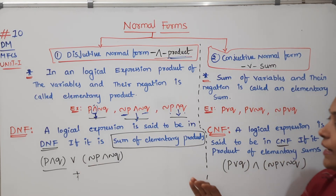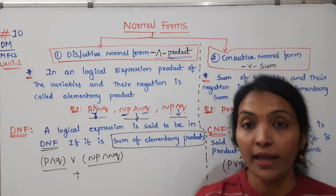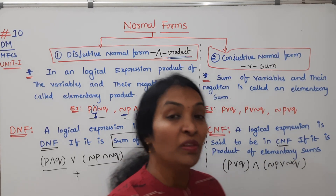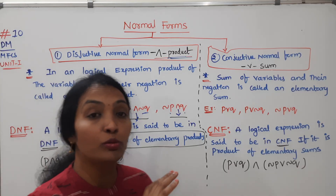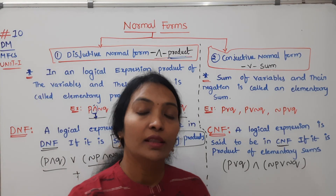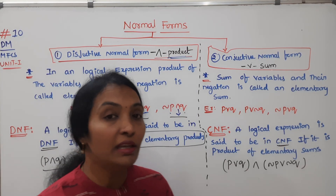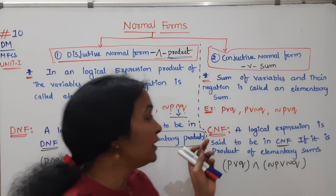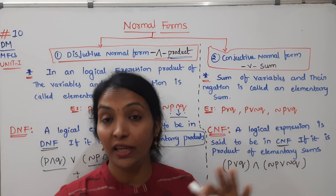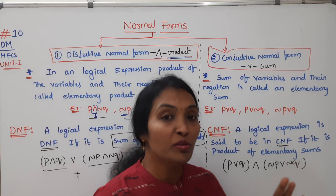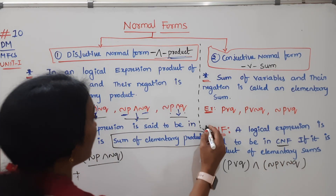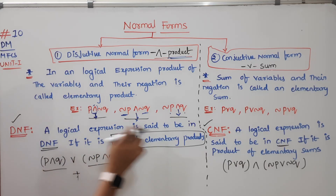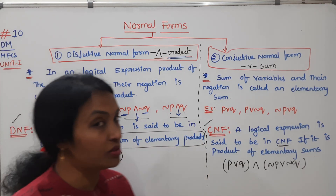This is the DNF and CNF. Now, we also have logical equivalence and truth tables. We know we can determine logical equivalence using a truth table. We can also obtain DNF, CNF, PCNF, and PDNF using these two methods, and check whether a logical expression satisfies those forms.